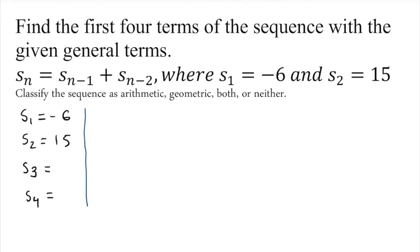The general term is s_n equals s_{n-1} plus s_{n-2}. This is a sequence, not a series. We're looking for s_3 this time because these two are already given, so we don't really have to worry. Instead of n, we're going to put down s_3: 3 minus 1 plus s_{3-2}.